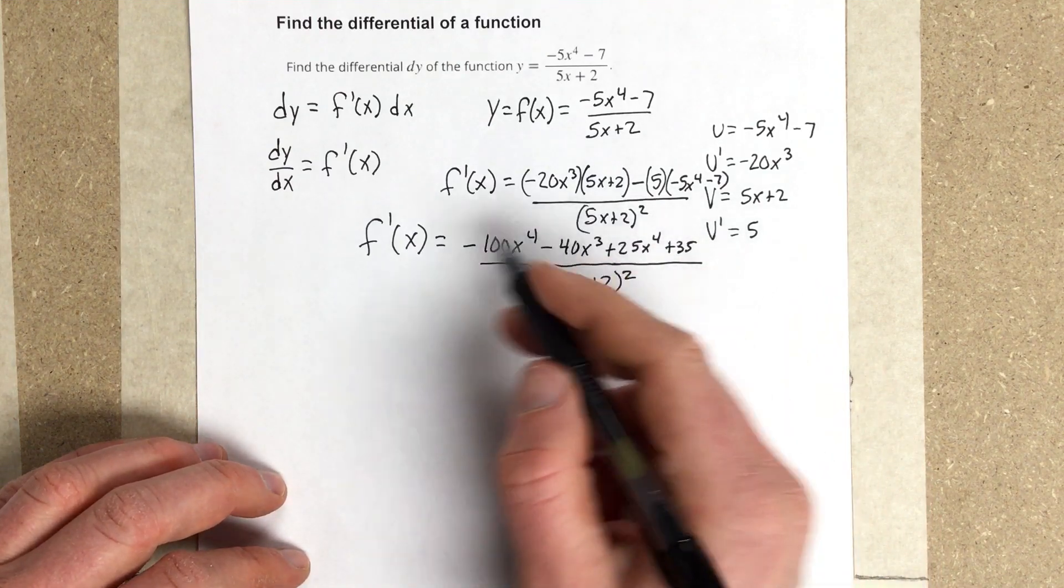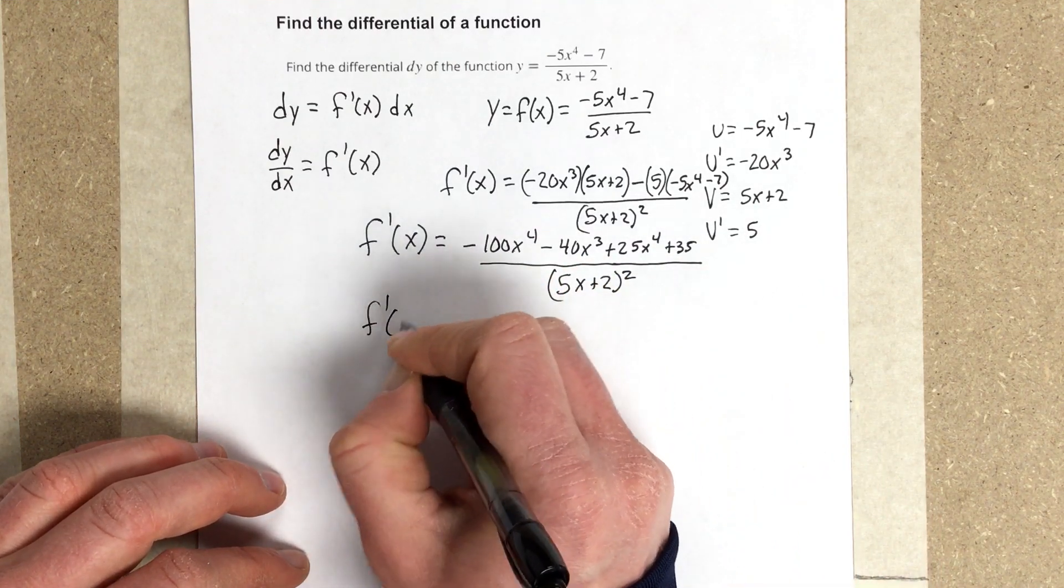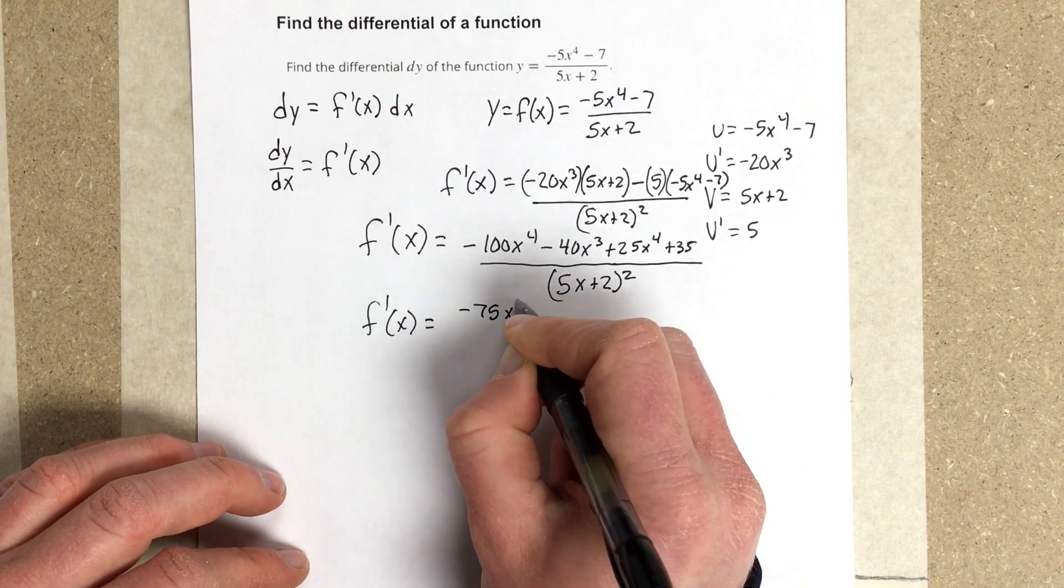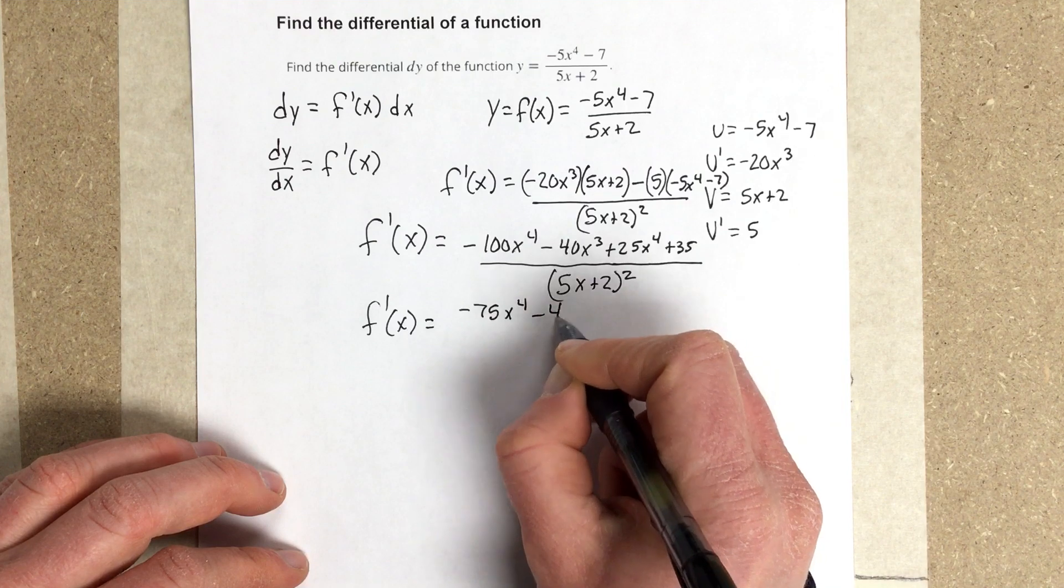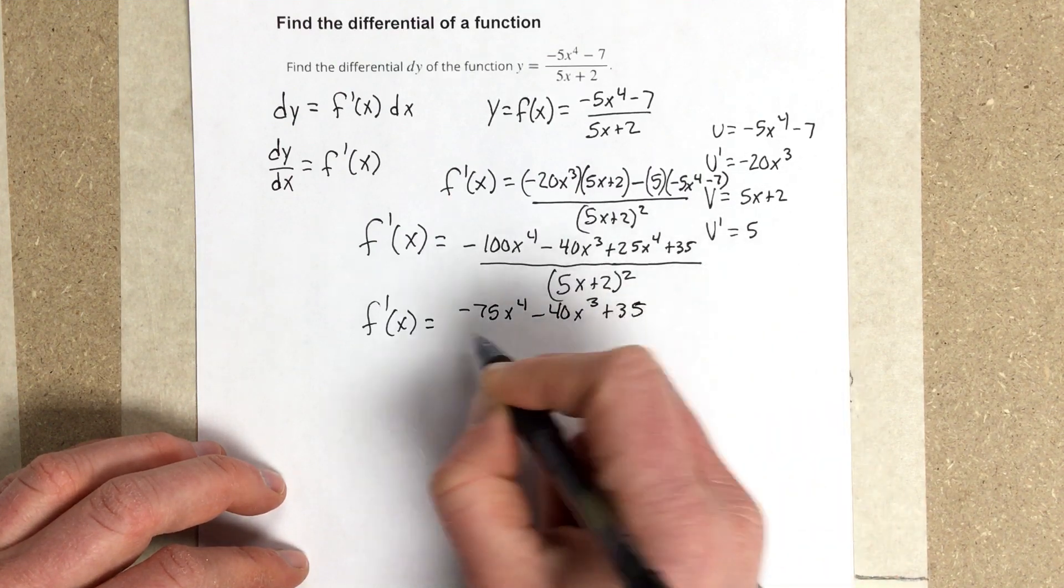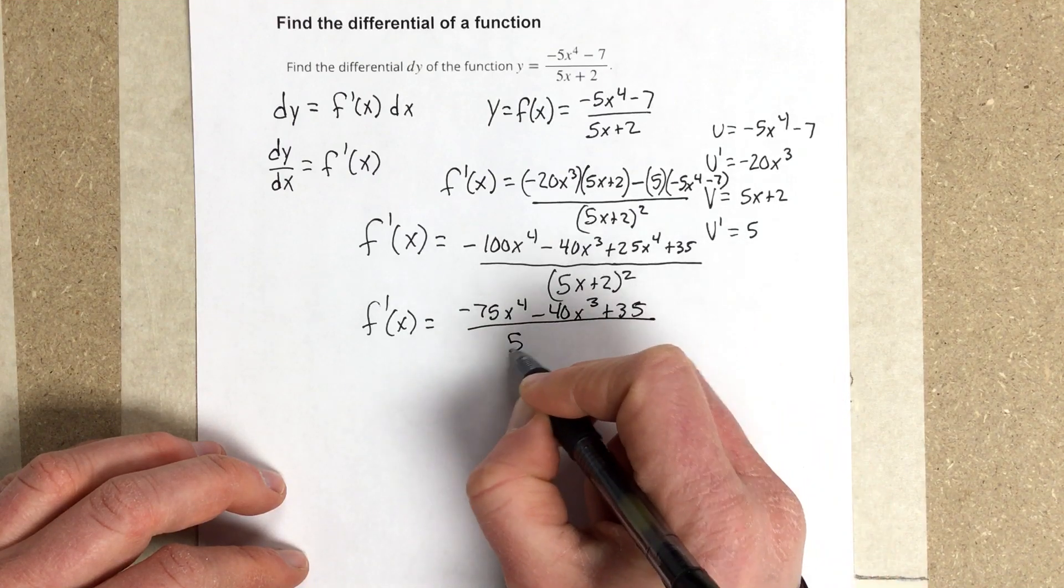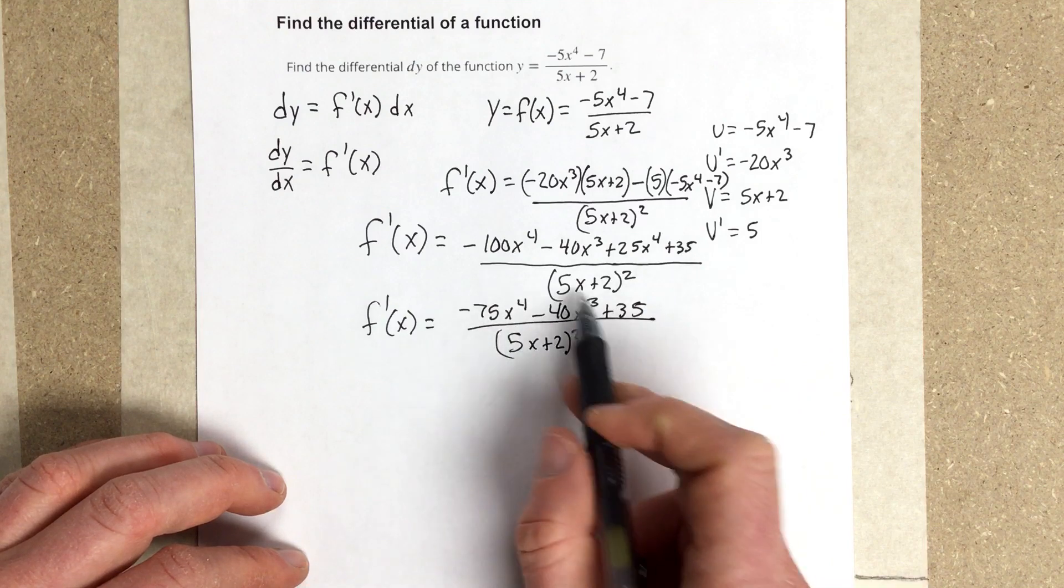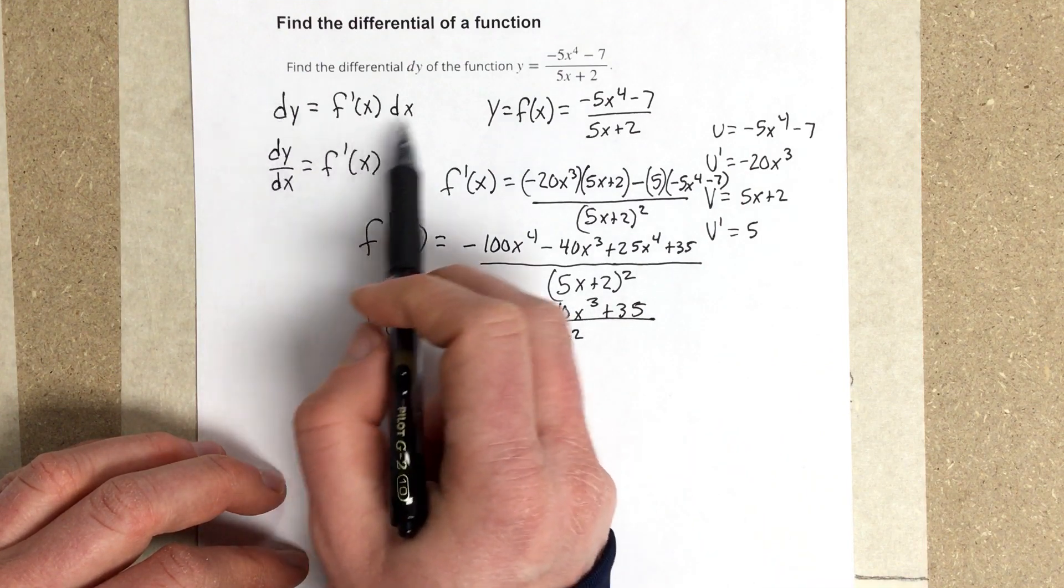I end up with negative 75, so f prime of x is equal to negative 75x to the 4th minus 40x cubed plus 35, when I combine the numerator, all over 5x plus 2 squared.